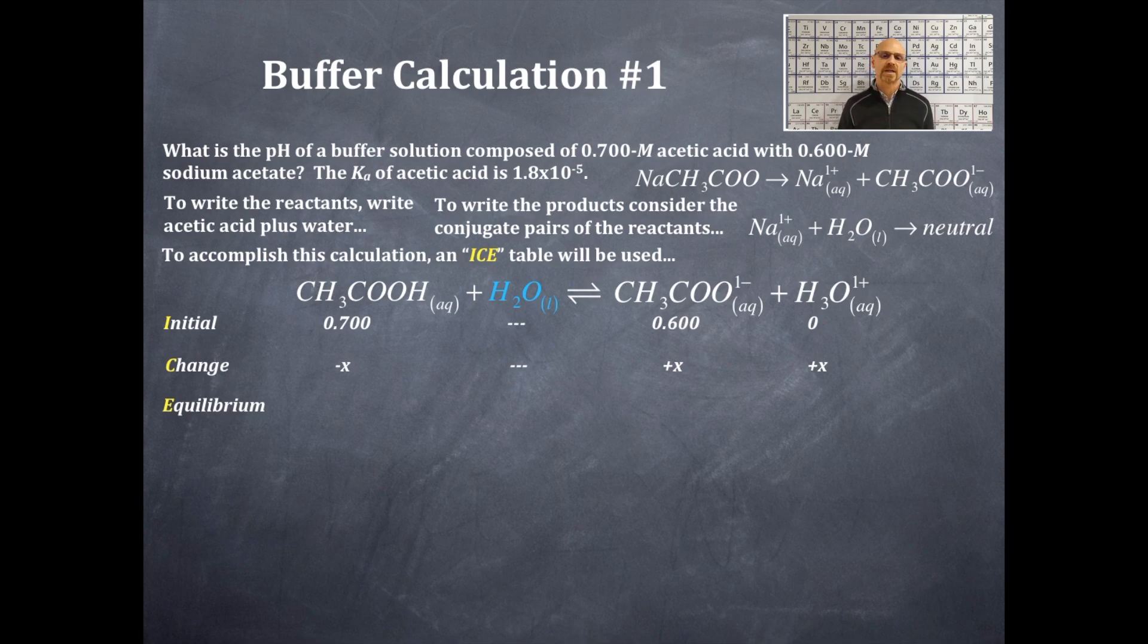So to get the equilibrium column I'm going to add up the initial and add up the change. That's 0.700 minus x that goes right there in the equilibrium. The water again I don't worry about that because it's a liquid and liquids are not included in Ka expressions. The acetate ion concentration is 0.600 plus x and the hydronium ion concentration is 0 plus x which is x.